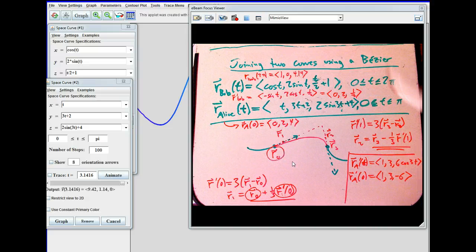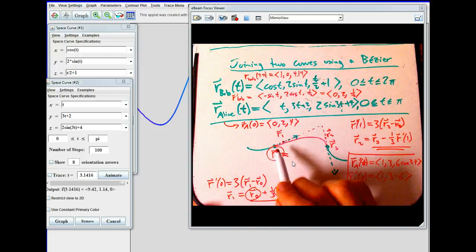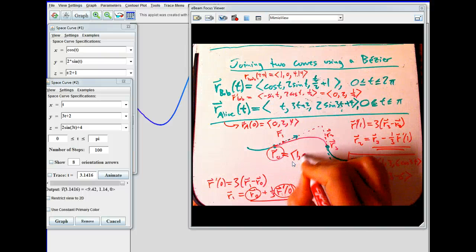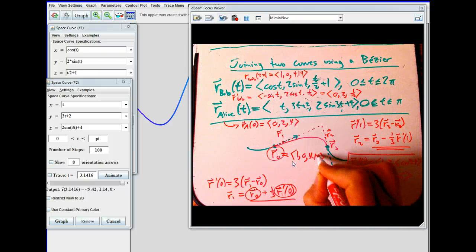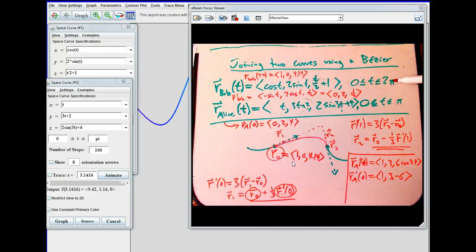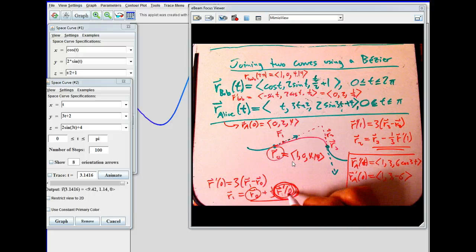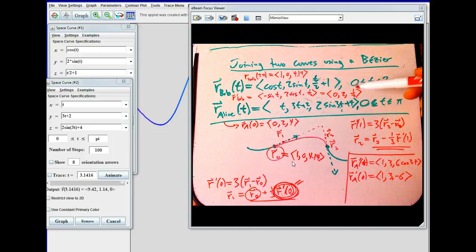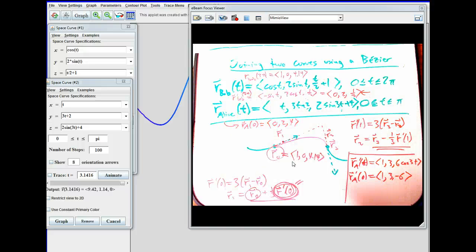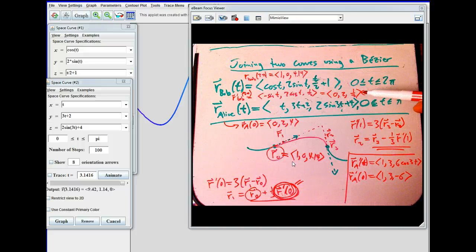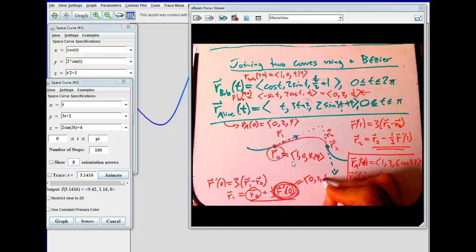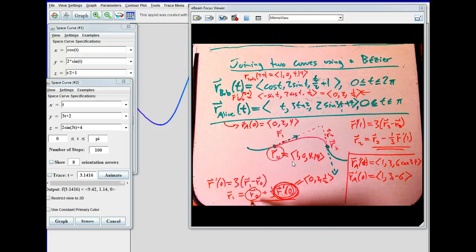Let's review what we wanted. R naught is the end of Bob's curve and therefore the start of the Bezier. We know what that is. It's one, zero, four point one four. That was just by evaluating Bob's curve at the end, whatever the correct t parameter was for the end of Bob's curve. Then R prime of zero for the Bezier, which isn't the direct information we put in the Bezier, but it's necessary to get there. That was the velocity of R prime of Bob at the end. So that's going to be the zero, two, one half. And in just a second, we'll be able to get R one. We'll just do this calculation, this plus a third of us.